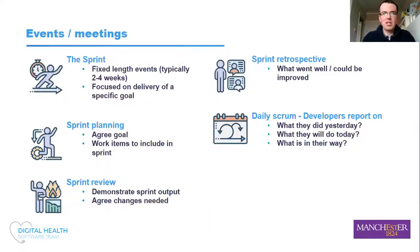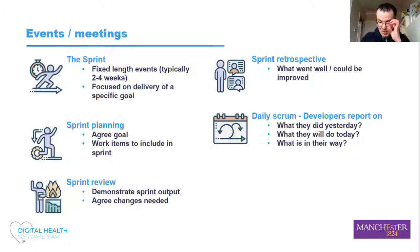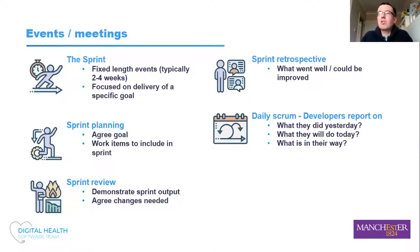Moving on to events or meetings: the Scrum sprint is the planning unit for Scrum. It's a fixed-length event, typically two to four weeks. In my team, we normally use three weeks, which we've found is a balance between being able to respond to changing requirements within a reasonable time, but also giving us enough time to deliver something useful within the sprint. They're focused on delivery, ideally of a single specific goal, sometimes a couple of goals.